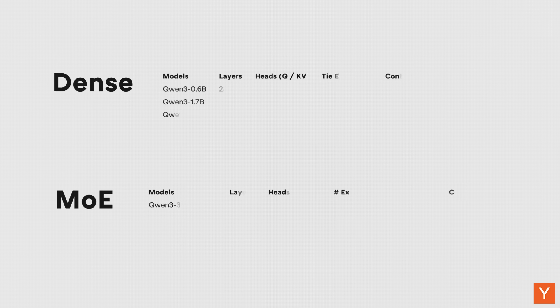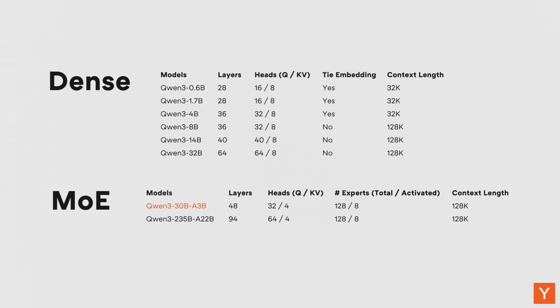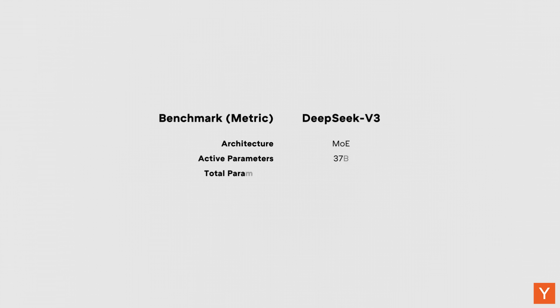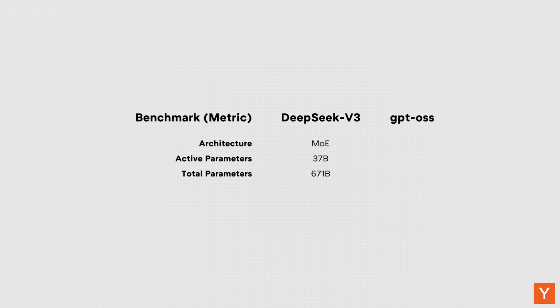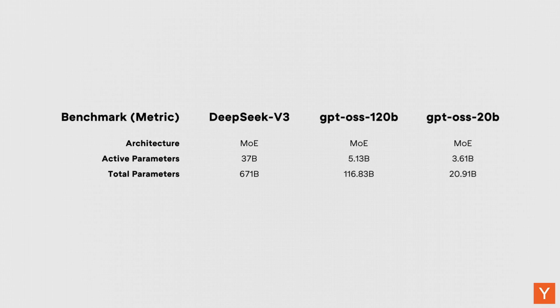With all that in mind, let's take a step back and compare these models at a high level. One big difference is size. The Qwen3 model family is the only one of the three to offer both dense and mixture of experts variants, with dense models from 0.6 billion to 32 billion parameters and MoE models including a 30 billion and a 235 billion parameter model. DeepSeek V3 only comes in a MoE architecture at 671 billion parameters, of which 37 billion are activated per token. GPT-OSS sits in the middle, offering two MoE models: one with 117 billion parameters (5.1 billion activated per token) and a smaller one with 21 billion parameters (3.6 billion activated per token).